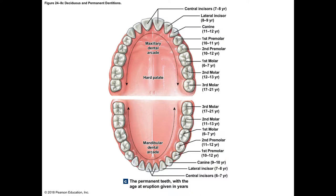There's also a third molar that erupts around 17 to 21 years of age — those are called wisdom teeth. Dentists sometimes worry about them because they can come in at an awkward angle and cause crowding, and may need to be removed.